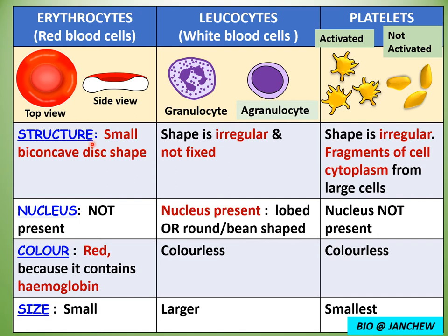Let's start with structure. The red blood cell has a biconcave disc shape — biconcave means it has a part in the center that is depressed inwards on both sides due to the absence of a nucleus. This shape gives it a large surface area to volume ratio, and because it is small and numerous, the total surface area to volume ratio is large, allowing faster diffusion of oxygen through the plasma membrane into the cell.